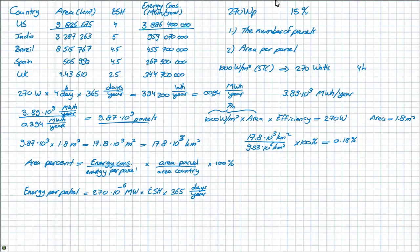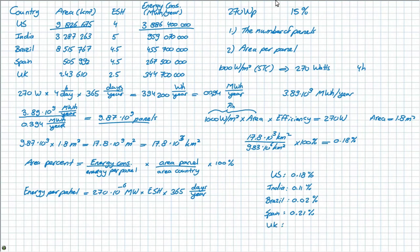If you do this calculation for all countries, you get these percentages. For the US, we already had 0.18%. For India, it's 0.11%. For Brazil, 0.02%. For Spain, 0.21%. And for the UK, 1.03%. Therefore, the country with the highest percentage of area needed to supply its own energy demand is the UK with 1.03%, and the country with the lowest is Brazil with 0.02%.